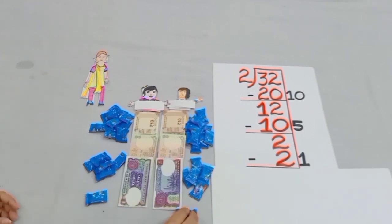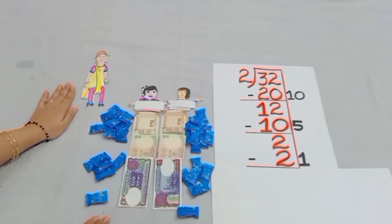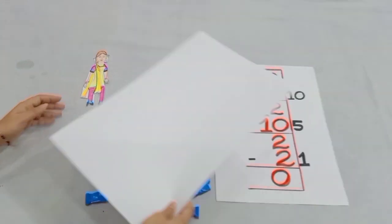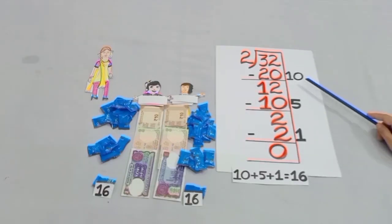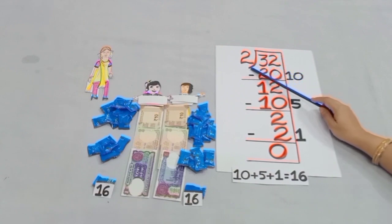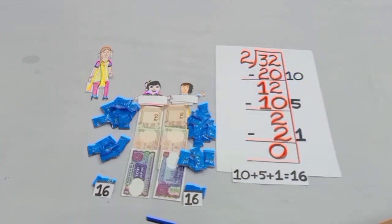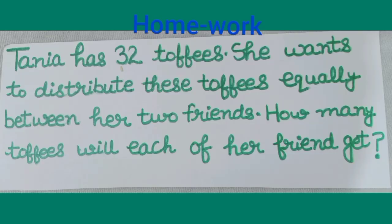After giving one more toffee to both her friends, is she left with any toffees? No, and no means 0. So from here it is clear that 10 plus 5 plus 1 is equal to 16. That means when 32 toffees were divided equally between the two friends, each friend got 16 toffees. And from here it is clear that 32 divided by 2 is equal to 16.